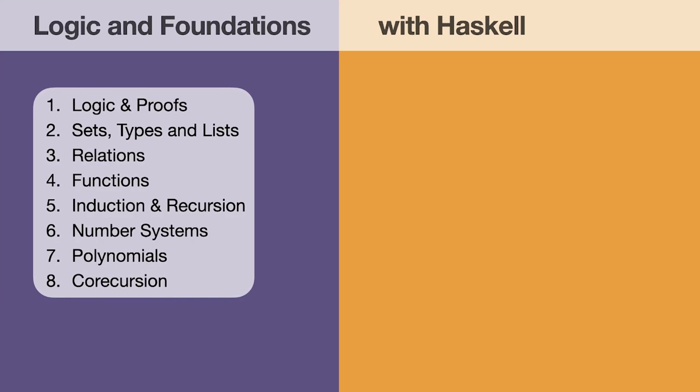In the theory part we'll basically be covering sort of the standard topics in a foundations of math course. So first we'll be spending a fair amount of time on logic and proof theory and then in the second part we'll basically move on to set theory. So in the set theory part we'll see sets types and lists along with relations and functions, induction and recursion, then we'll move on to number systems and then in the end we'll see polynomials and co-recursion.